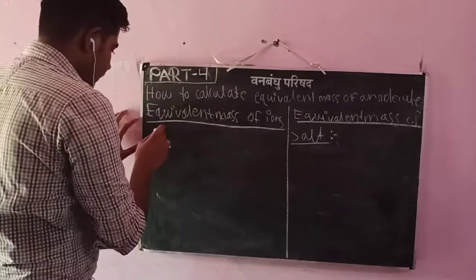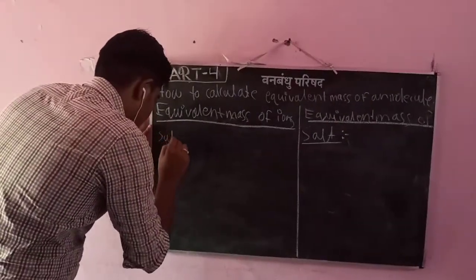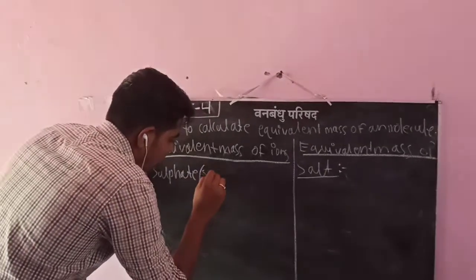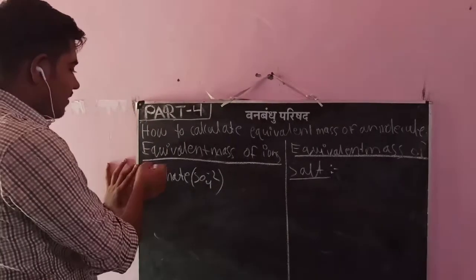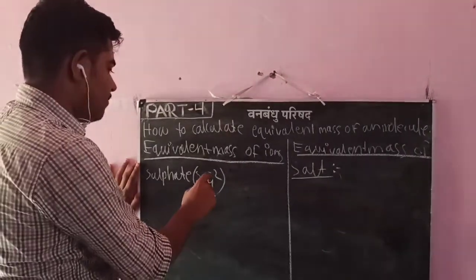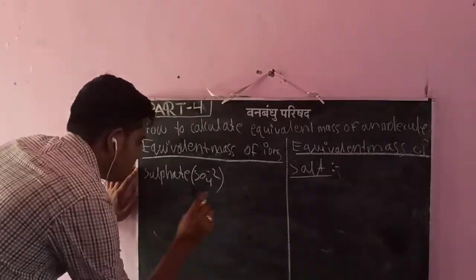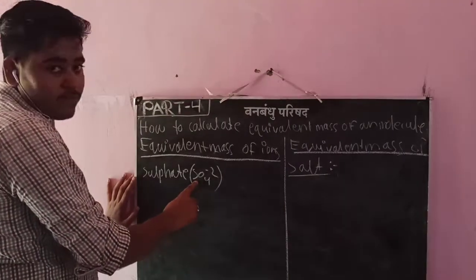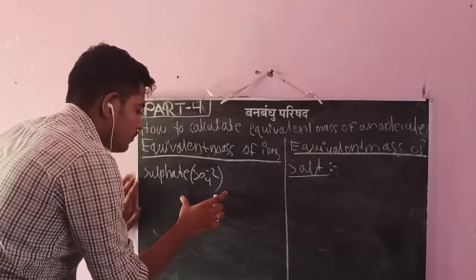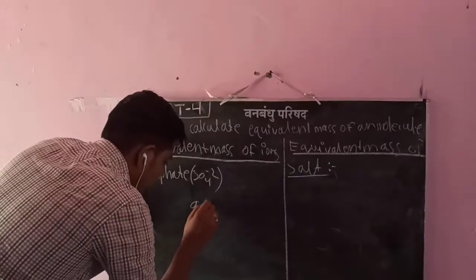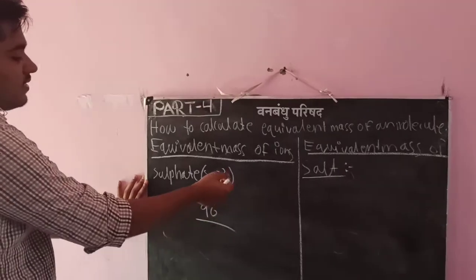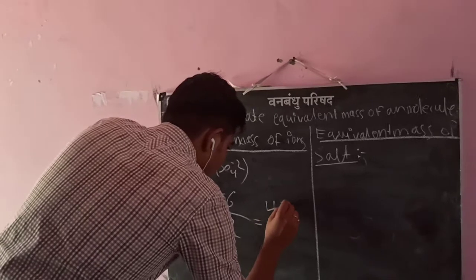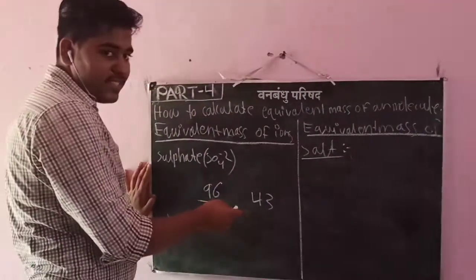Now sulphate. For the sulphate ion, we look at the charge which is minus 2. The molecular mass is 96, divided by charge 2, giving an equivalent mass of 43 for sulphate. That answer is correct.